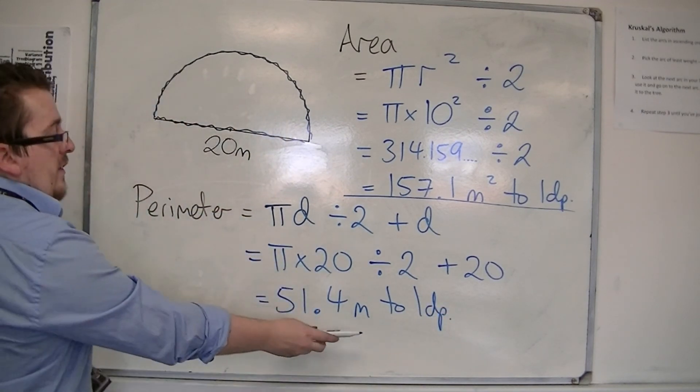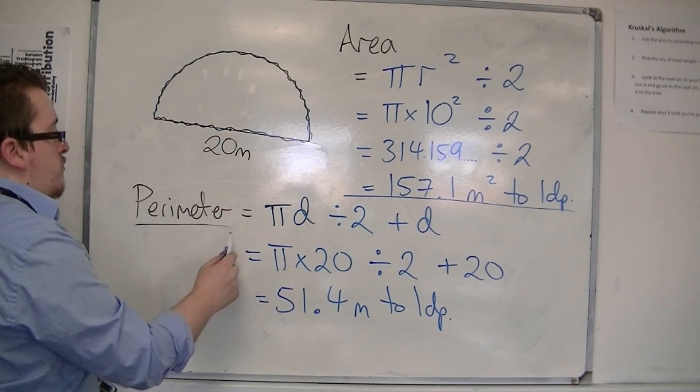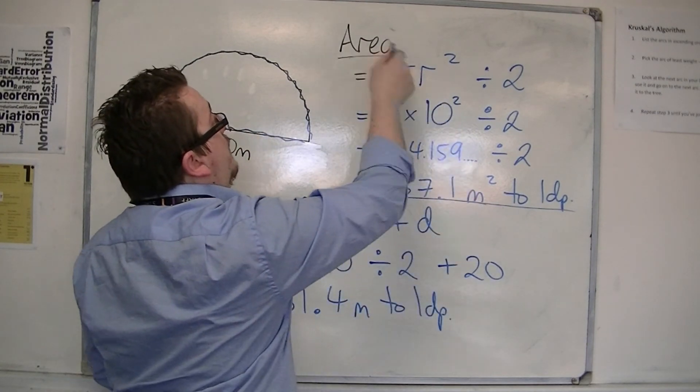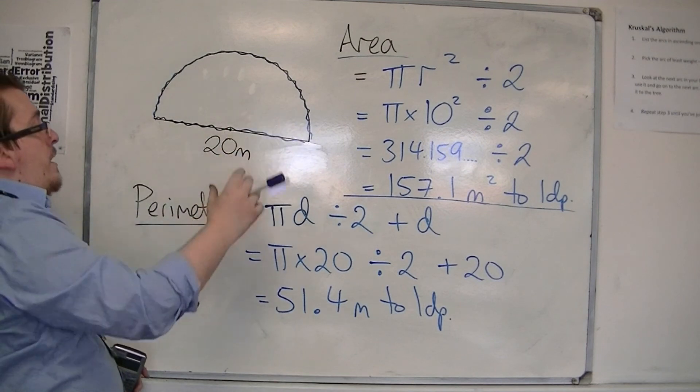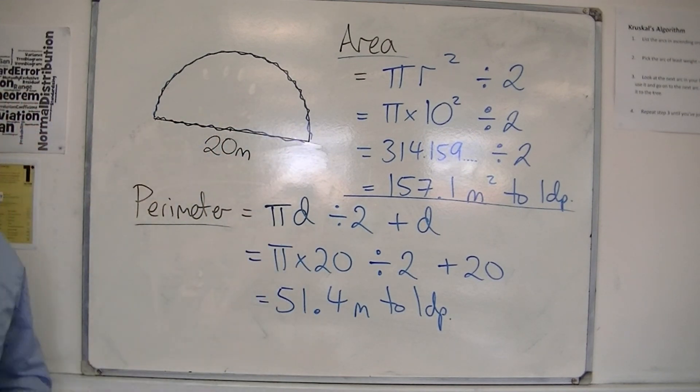And notice the units. It's metres there because we're working with the perimeter. Metres squared here because we're working with the area. And that's how we can work out the area and the perimeter for this semicircle.